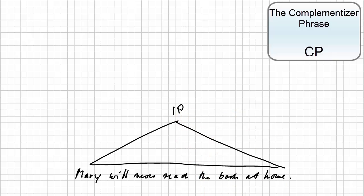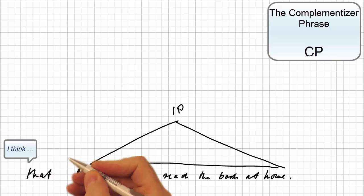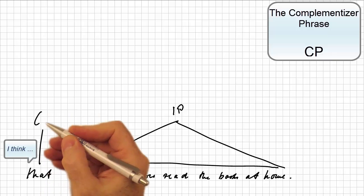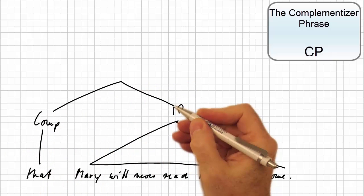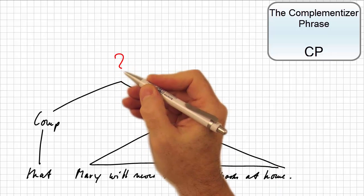But what happens if we introduce the sentence by a complementizer such as that, as in, I think that Mary will never read the books at home? The simplest solution is that the complementizer and the inflectional phrase are sisters of a higher mother node.